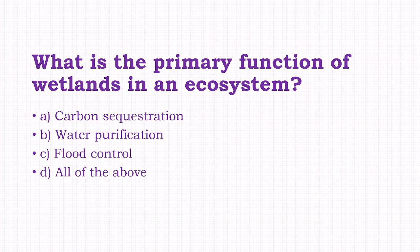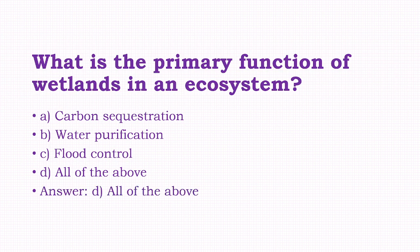What is the primary function of wetlands in an ecosystem? Options: carbon sequestration, water purification, flood control, all of the above. The answer to this question is option D, that is all of the above.